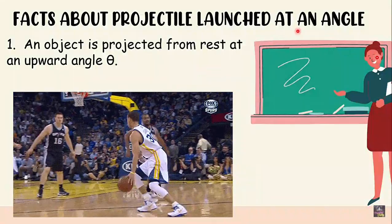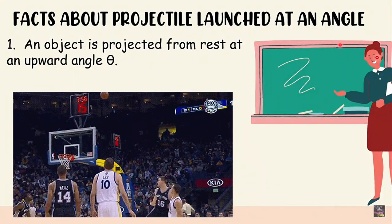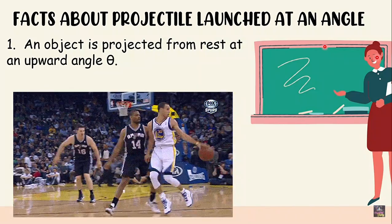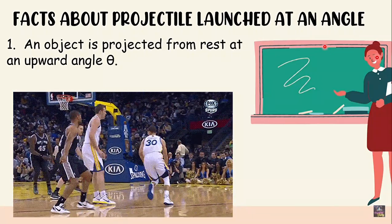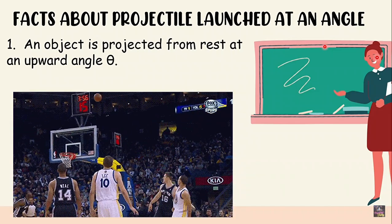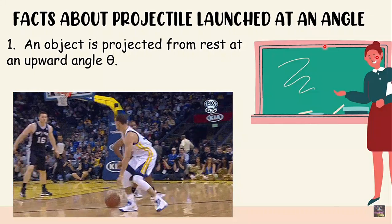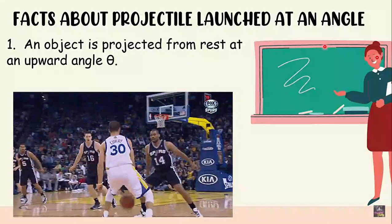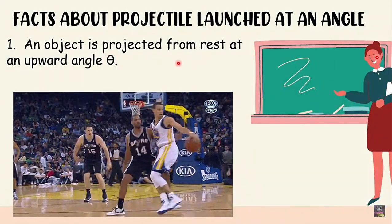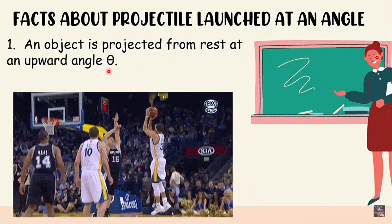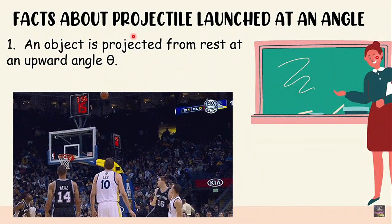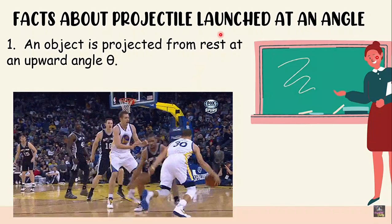What are some facts about projectiles that are launched at an angle? This is very essential because later on we will be solving problems about projectiles launched at an angle. You have to really understand the concepts and facts about angle-launched projectiles to be able to answer correctly. An object projected from rest at an upward angle — any object being projected or thrown upward — is considered a projectile launched at an angle.